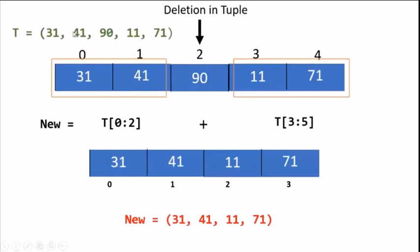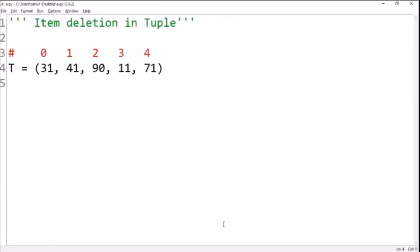Keep in mind that we will not modify the previous tuple but create a new tuple. In the program, we will see how to make this work. One tuple is created here with 5 values. We have the index numbers in the comment box.